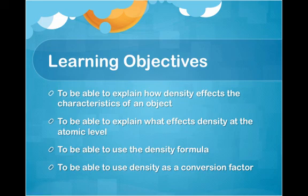So, to wrap things up, let's go over the learning objectives we talked about today. First of all, our job was to be able to explain how density affects the characteristics of an object. We talked about the example of an empty versus a full suitcase, and we talked about the example of having gold versus aluminum. The next job was to be able to explain what affects density at the atomic level, and we identified two factors: the mass of the individual atom as well as how packed the atoms are. We then talked about the density formula and the ability to manipulate it algebraically, and then finally we talked about how to use density as a conversion factor.